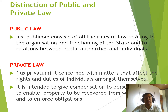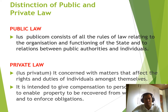To define each type of law — public law, or ius publicum, consists of all the rules of law relating to the organization and functioning of the state and to relations between public authorities and individuals. Private law, or ius privatum, is concerned with the matters that affect the rights and duties of individuals among themselves. It is intended to give compensation to persons injured, enable property to be recovered from offenders, and to enforce obligations.